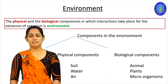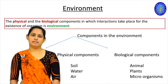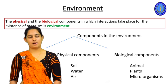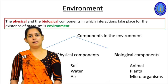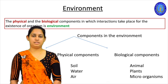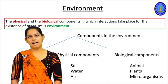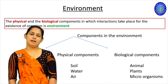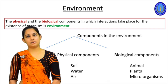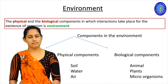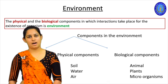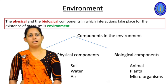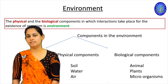First let us see what is the environment. Simply we can say the environment is our surrounding, but in a standard way we can explain the environment with a more complex definition. That means the physical and biological components in which interactions take place for the existence of the organism is the environment. There are physical components as well as biological components, and they interact together in order to make a suitable place for the existence of organisms.